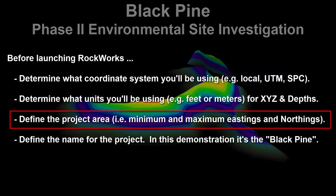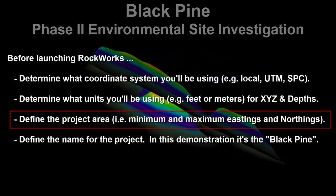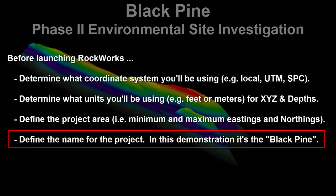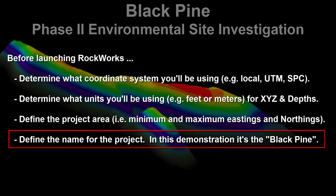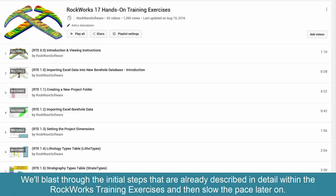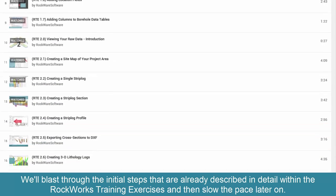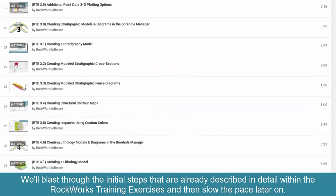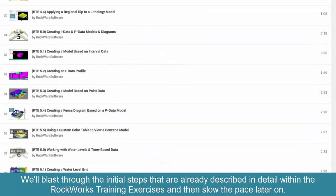Define the project area — the minimum and maximum eastings and northings — and define the name for the project. In this demonstration, it's the Black Pine. Be forewarned that we'll blast through the initial steps that are already described in detail within the RockWorks training exercises, and then we'll slow the pace down a bit.